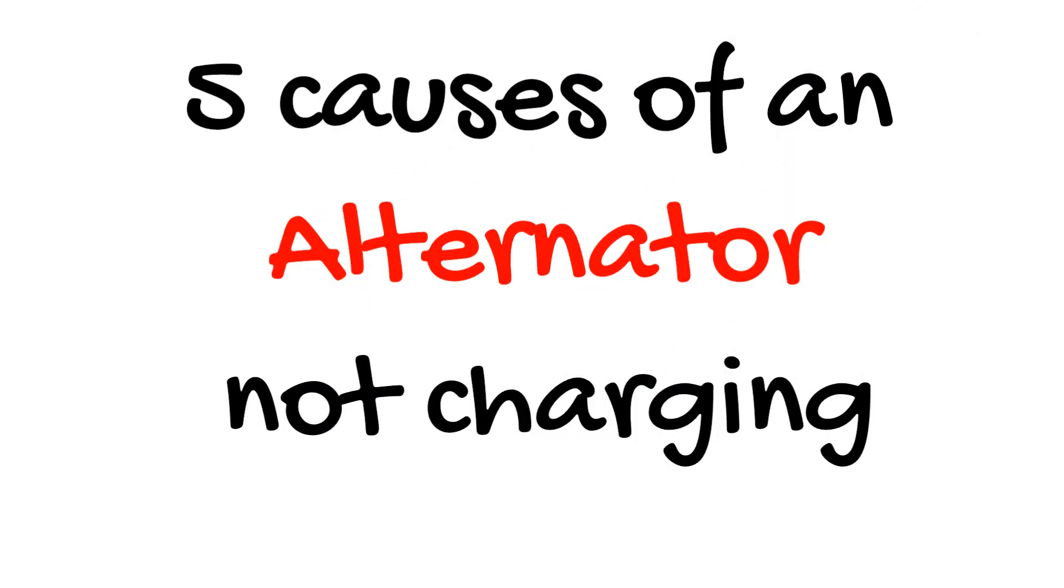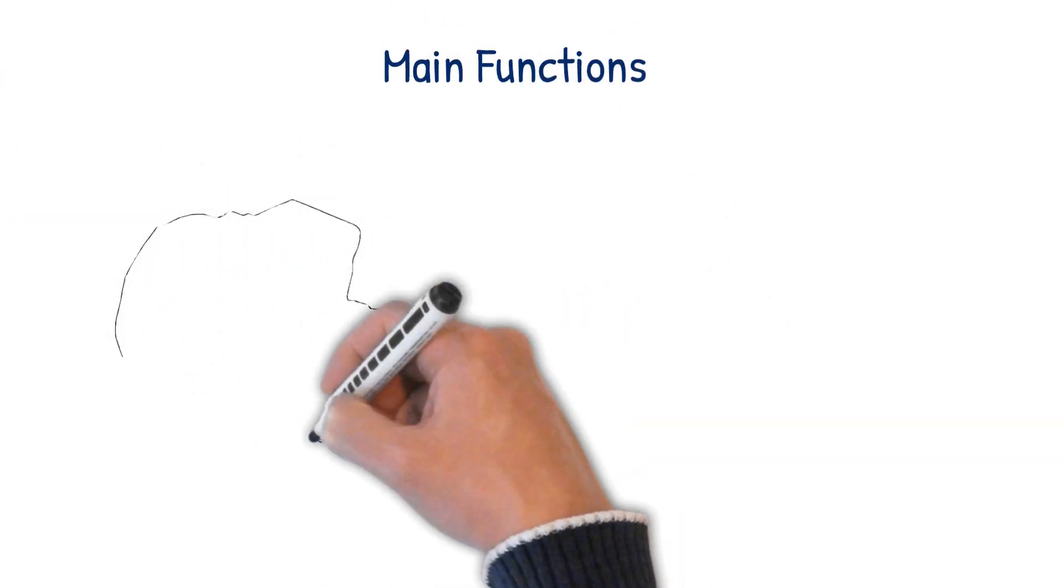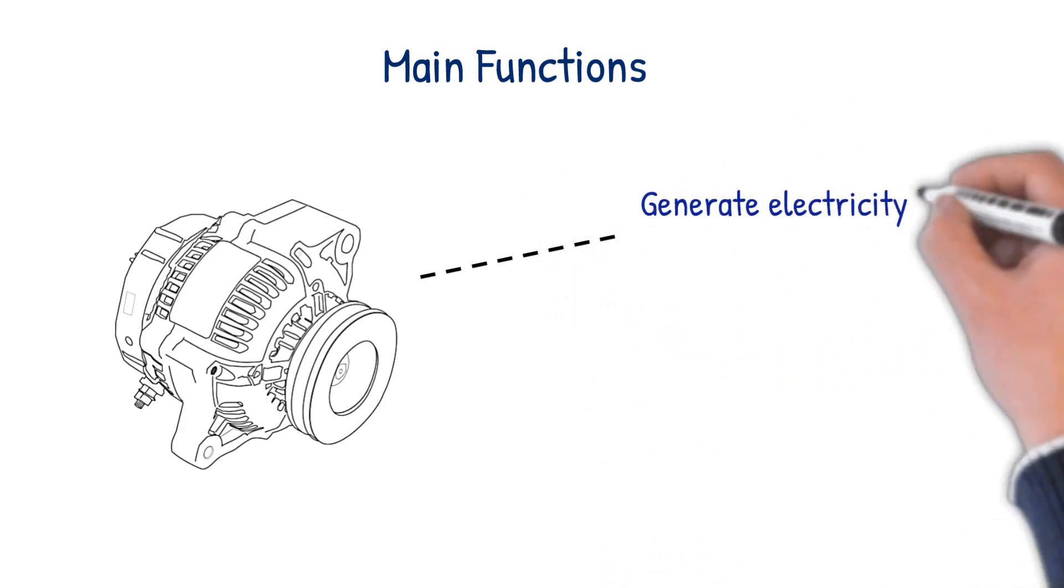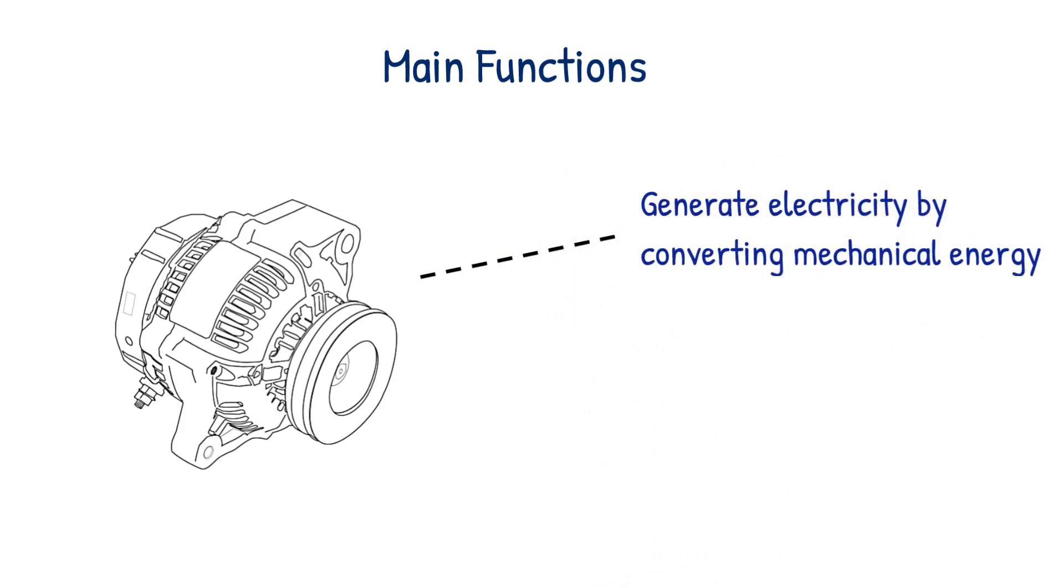Today we will be discussing the five causes behind an alternator not charging correctly. The main functions of an alternator are to generate electricity for the electrical components of the vehicle and to charge its battery. The alternator produces this electrical energy by converting mechanical energy.